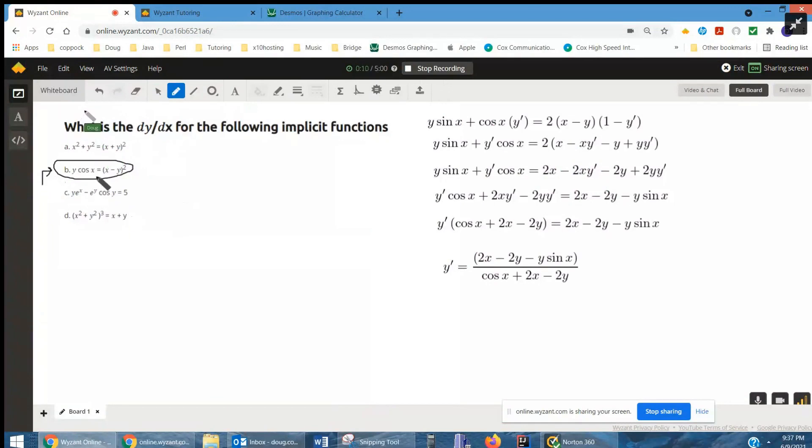To take the derivative implicitly, we're going to have to use the product rule on the left-hand side of the sign. So here we go. Product rule: first times the derivative of the second, plus the second times the derivative of the first.